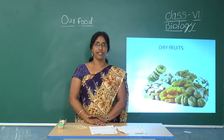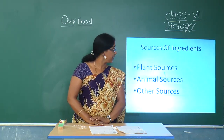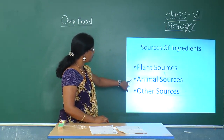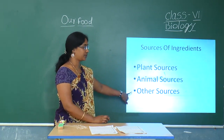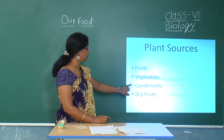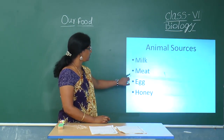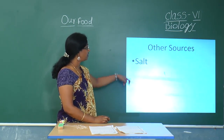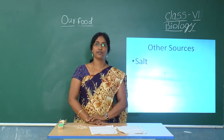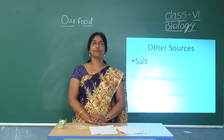Till now we discussed what are ingredients. Now let us have a look at what are the sources of ingredients. There are three sources of ingredients: one is plant source, the other is animal sources, and the next one is other sources. Plant source examples are fruits, vegetables, condiments, and dry fruits. Animal sources are milk, meat, egg, and honey. Then what about the other source? Salt is the other source — salt is not available from plants or animals, it is available from sea water, so it comes under other sources.